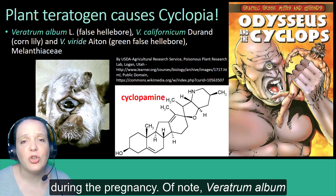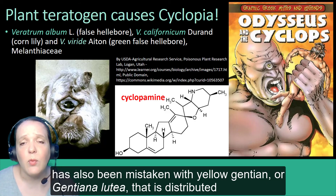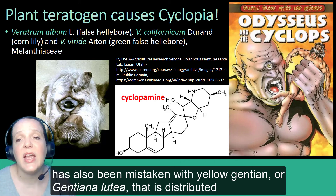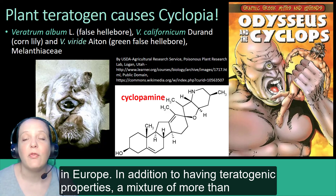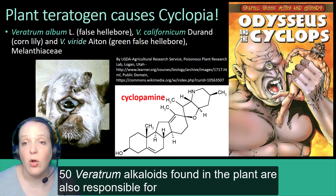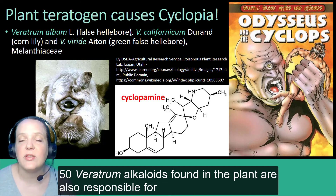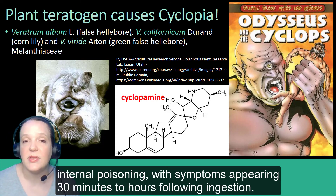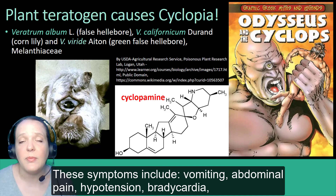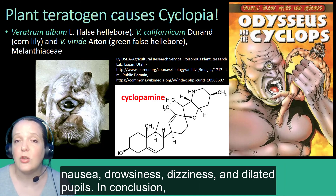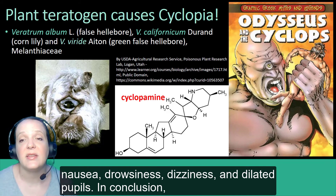Of note, Veratrum album has also been mistaken with yellow gentian, or Gentiana lutea, distributed in Europe. In addition to having teratogenic properties, a mixture of more than 50 Veratrum alkaloids found in the plant are also responsible for internal poisonings, with symptoms appearing 30 minutes to hours following ingestion. These symptoms include vomiting, abdominal pain, hypotension, bradycardia, nausea, drowsiness, dizziness, and dilated pupils.